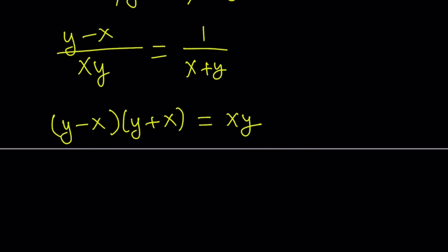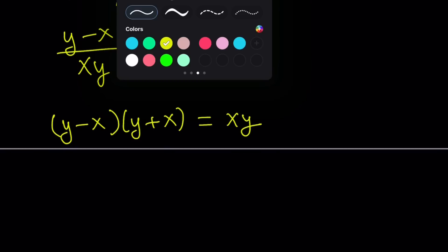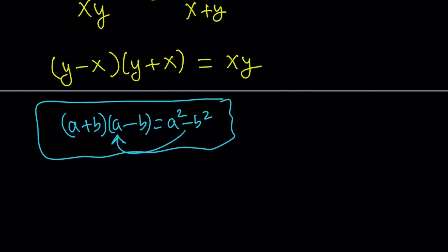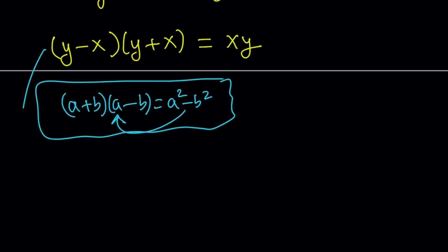Difference of two squares is a very important identity. If you ask me one of the most important ones. So if you multiply a plus b and a minus b you get a squared minus b squared and vice versa. Of course it can also be factored that way. And this is very important. So using that we can write this product as y squared minus x squared and that is equal to xy.